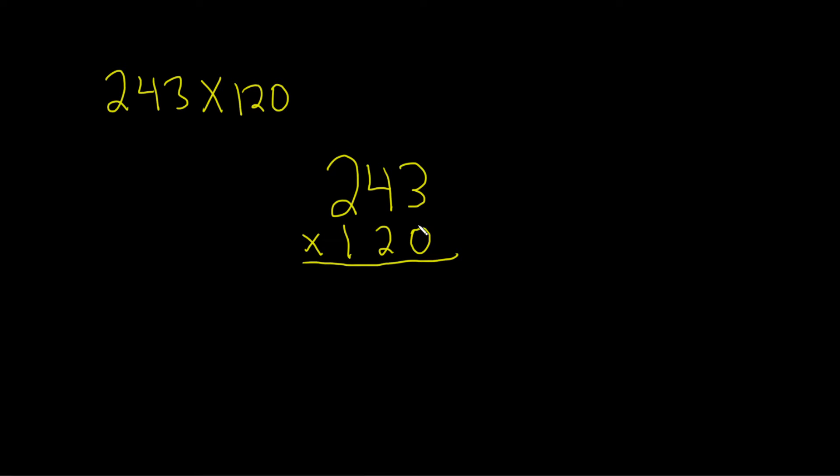Let's start with the 0. So 0 times 3 is 0, 0 times 4 is 0, 0 times 2 is 0. So we just take the 0 and multiply it by each of these. Then we go to the next number.